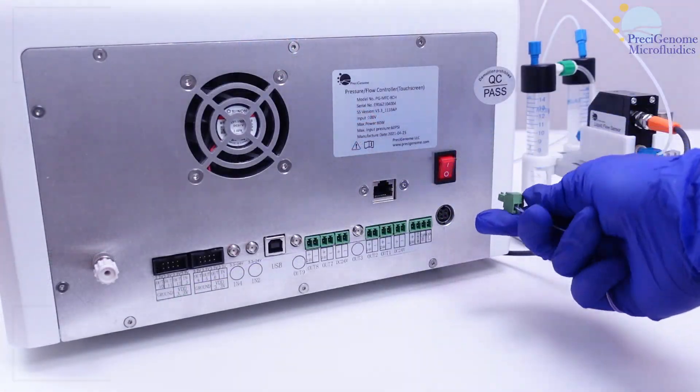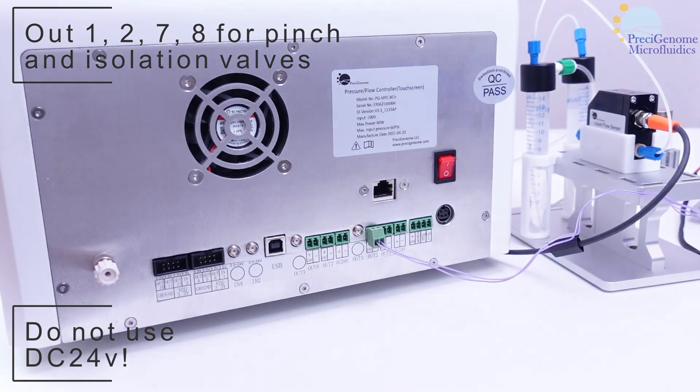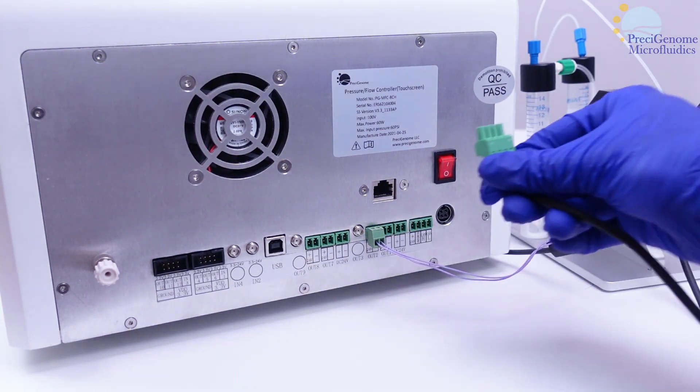Pinch and isolation valves can be plugged into outlets 1, 2, 7, or 8, but not the DC 24V ones.